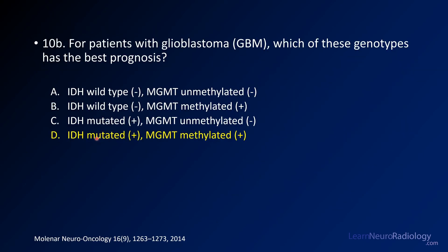So in this case, you want to be IDH mutated and MGMT methylated, which makes D your answer.